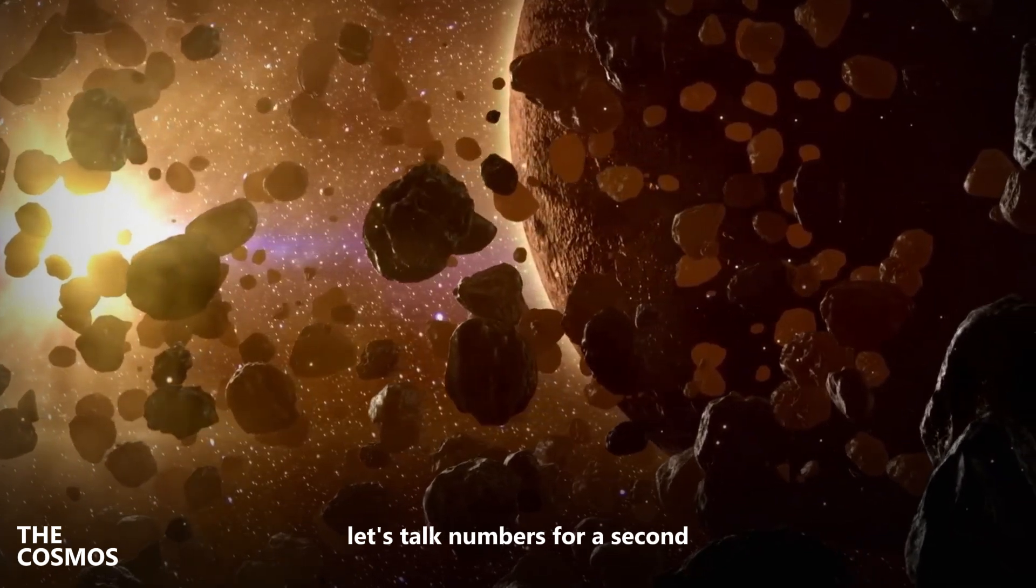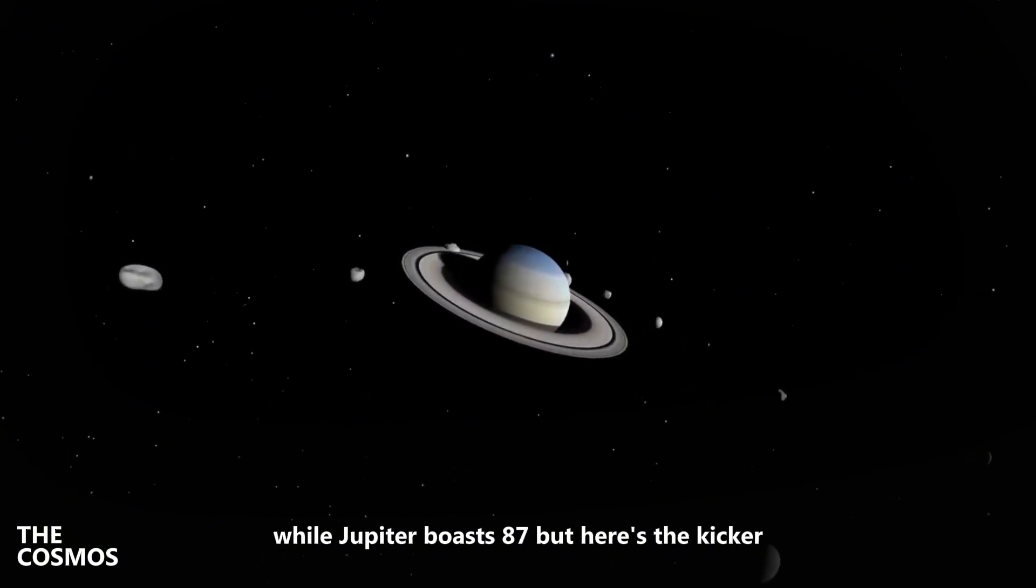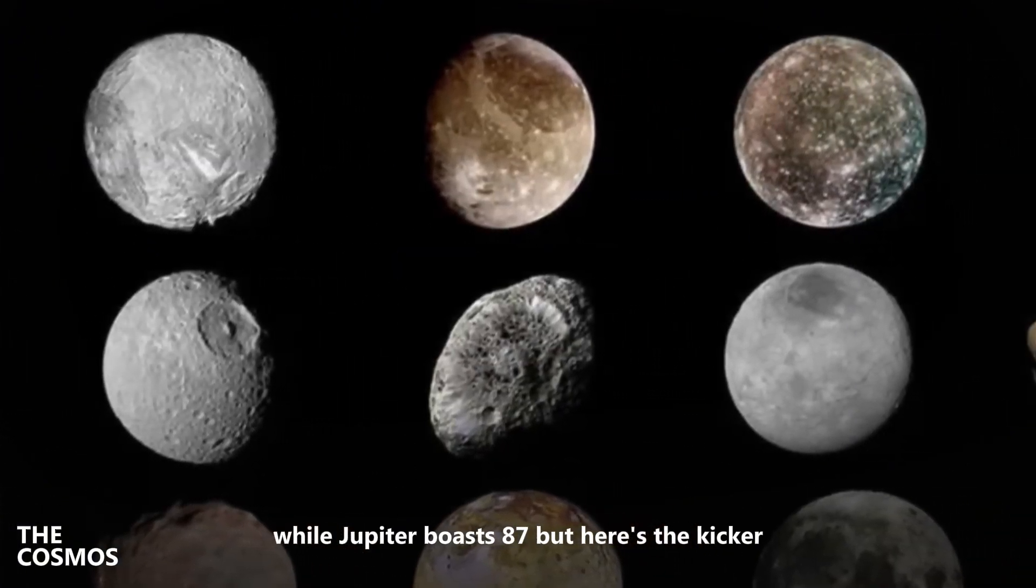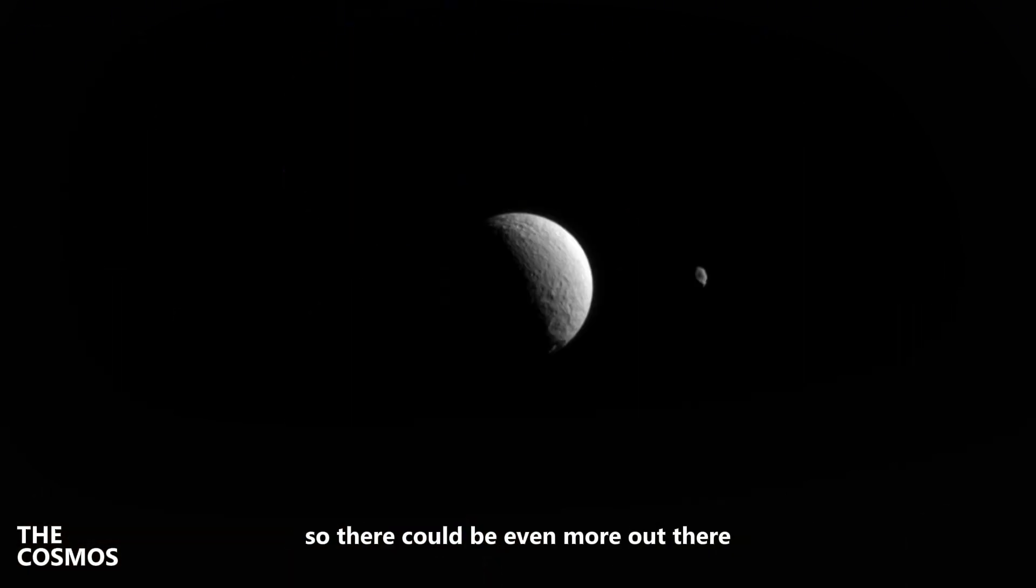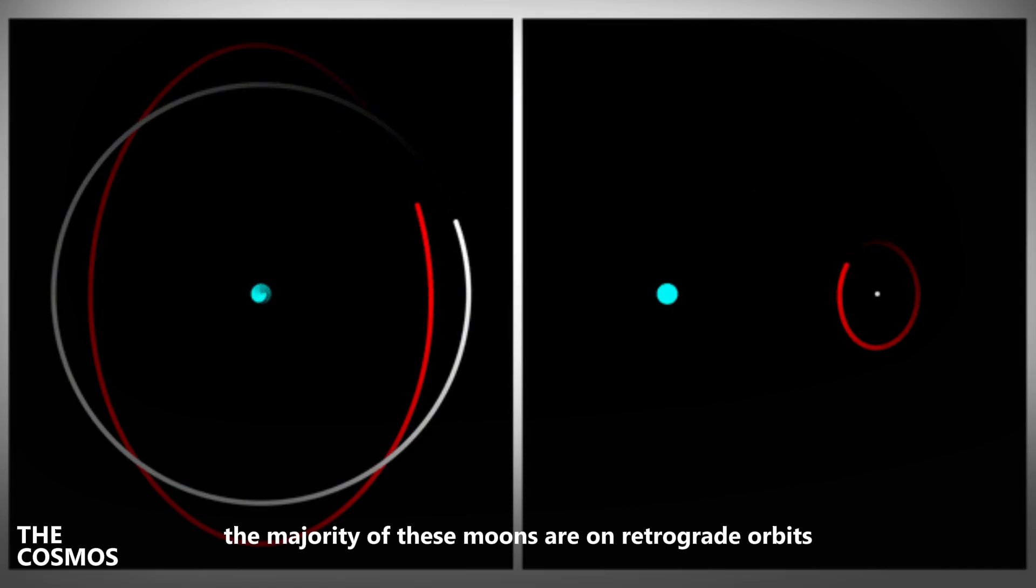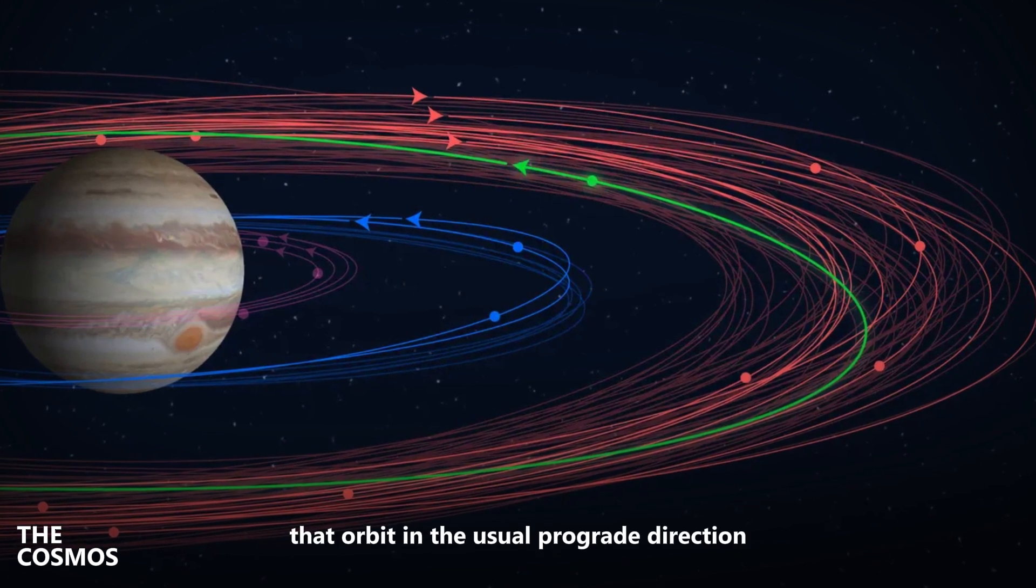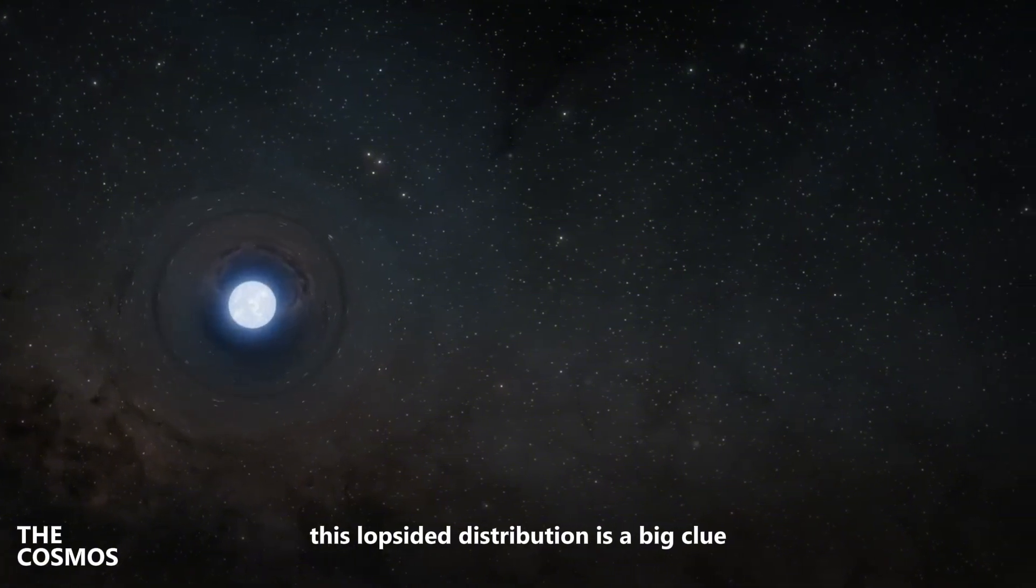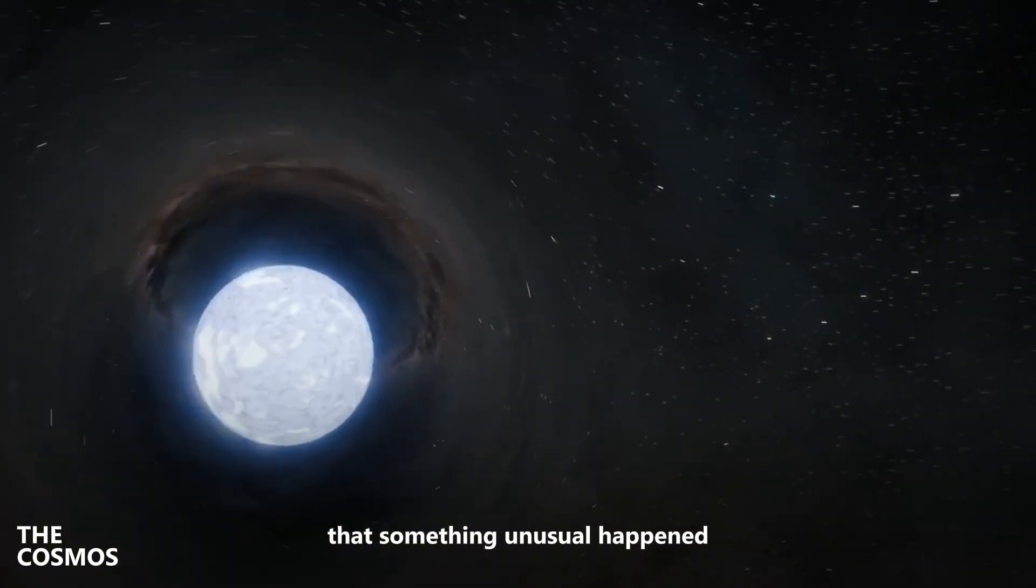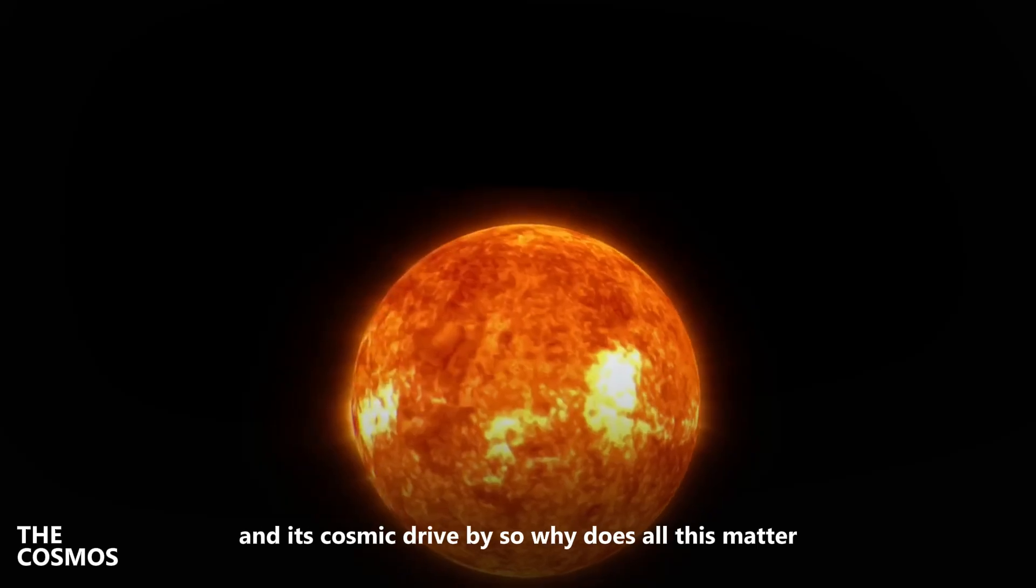Let's talk numbers for a second because they're pretty wild. Saturn has 122 known irregular moons, while Jupiter boasts 87. But here's the kicker: detecting smaller distant moons is tough, so there could be even more out there. And the majority of these moons are on retrograde orbits. Jupiter alone has 71 retrograde moons, compared to just 16 that orbit in the usual prograde direction. This lopsided distribution is a big clue that something unusual happened, a clue that points directly back to that rogue star and its cosmic drive-by.